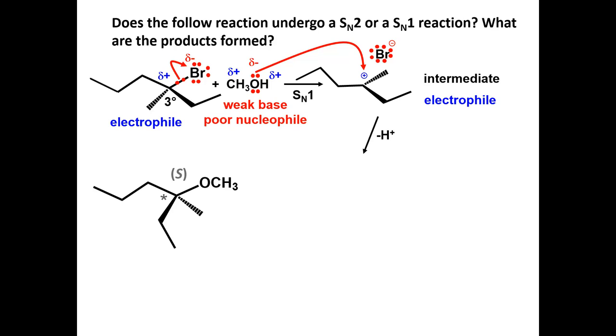Notice that the ether produced in this reaction has a stereogenic carbon. This carbon has an S configuration. Since the carbocation intermediate is sp2 hybridized and trigonal planar, methanol will also attack from the other face to produce the R enantiomer.